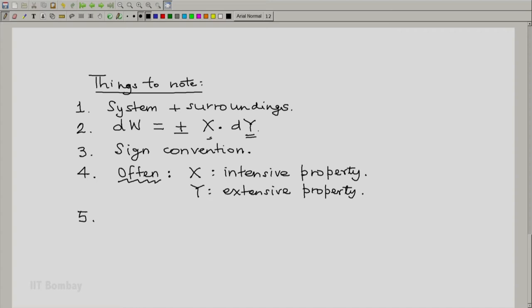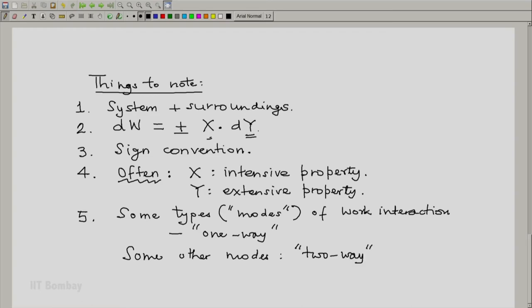And the fifth point to note is that some types, what we call modes of work interaction, are one way. We will look at the illustrations again to understand what we mean by this. Some other modes are two way. Let us go back to our illustration and look at these points again.